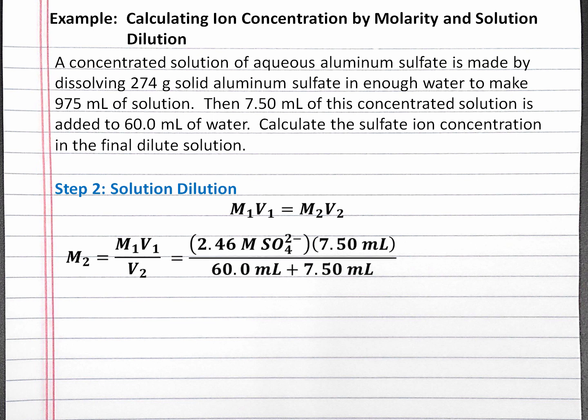The concentration of sulfate in our concentrated solution is 2.46 molar sulfate, and we're using 7.5 milliliters of this concentrated solution. The volume of our dilute solution is the 60 milliliters of water plus 7.5 milliliters of the concentrated solution, assuming a linear addition of volumes. Performing this calculation, we should get 0.273 molar sulfate in the dilute solution.